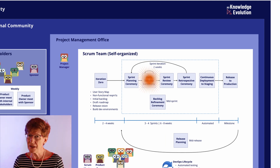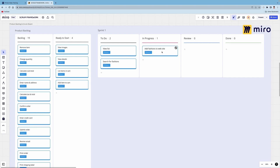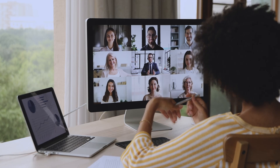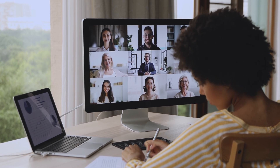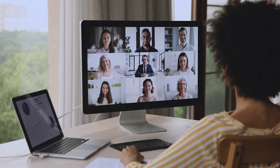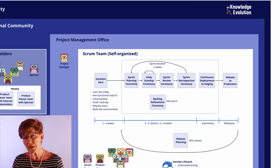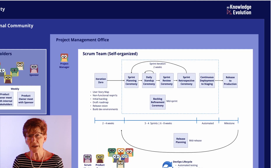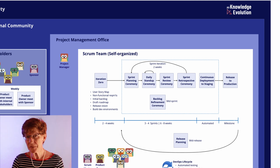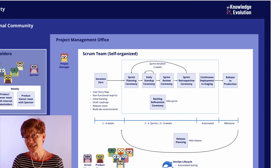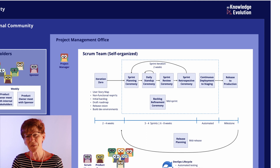In the daily stand-up, the entire Scrum team attends and brings the sprint board. As a reminder, this is not a status meeting — it is brief, usually 15 minutes. The team gathers around the sprint board or shares it online, and each team member briefly tells the team what they did yesterday, what they plan to do today, and whether they have any impediments. During the stand-up, we identify team collaborations needed that day, and the Scrum master and product owner may take away follow-ups to remove impediments and get questions answered. The objective is that the team has planned their day. The daily stand-up occurs each morning of a two-week sprint, and if team members are in different time zones, the time should be adjusted so that everyone can attend.